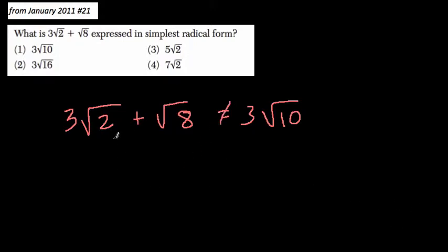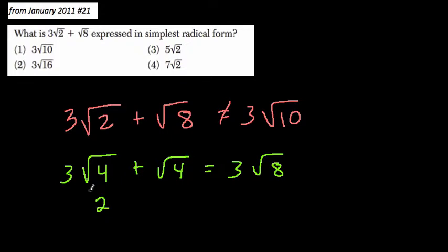And you don't have to memorize it, you can just try it for any simple perfect square. So let's say I have the square root of 4 plus the square root of 4. And we say, alright, 3 times the square root of 4 plus the square root of 4, does that equal 3 times the square root of 8? Well, no, because the square root of 4 is 2. So 2 times 3 plus 2, like the square root of 4 is 2, equals 8.